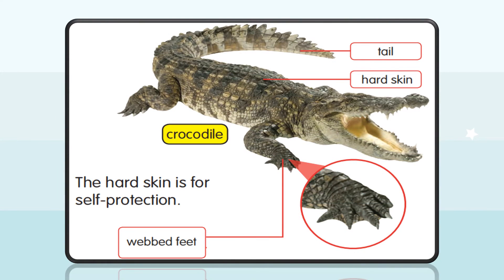Now let us look at this picture. This is a crocodile. A crocodile has a tail, hard skin, and webbed feet. Now look at this — the hard skin is for protection.